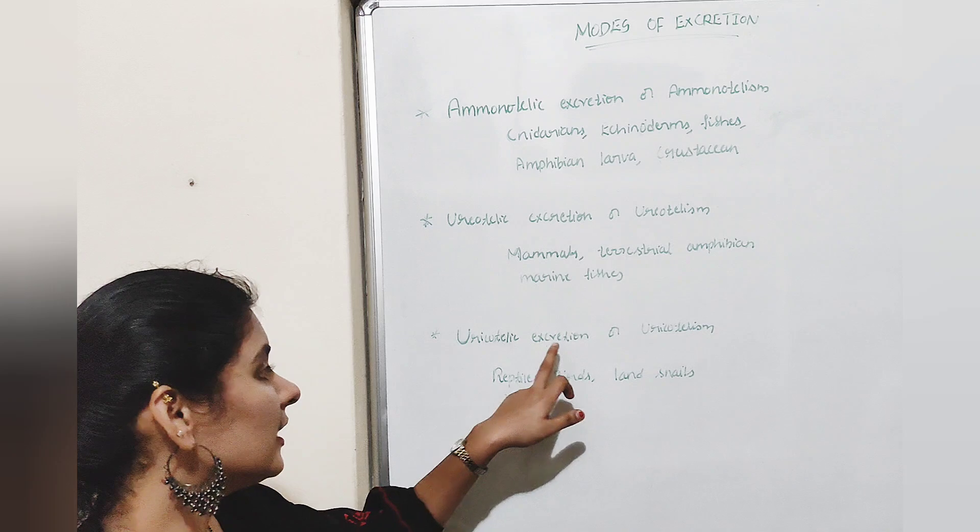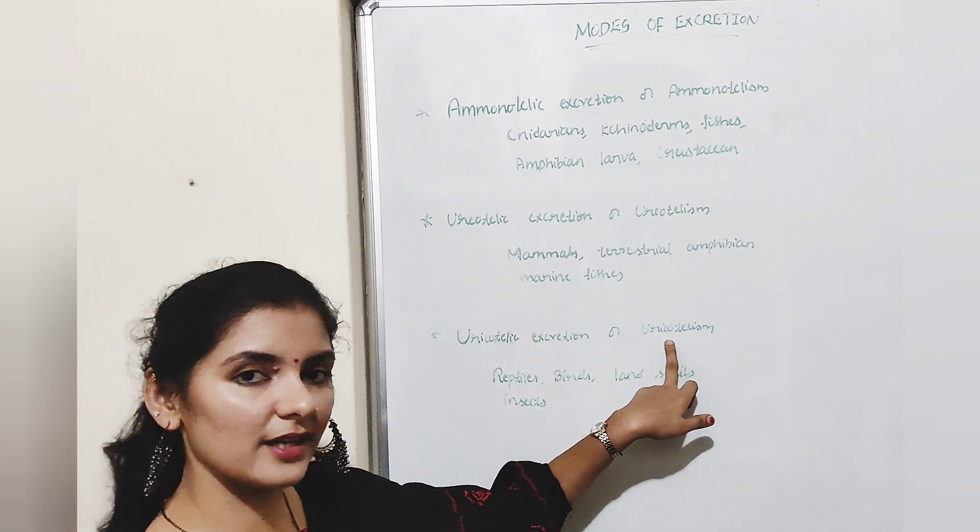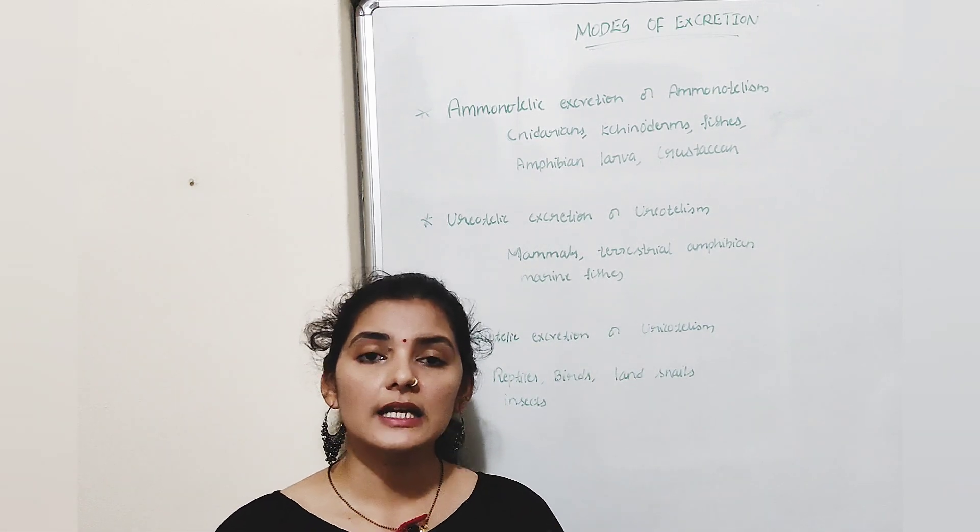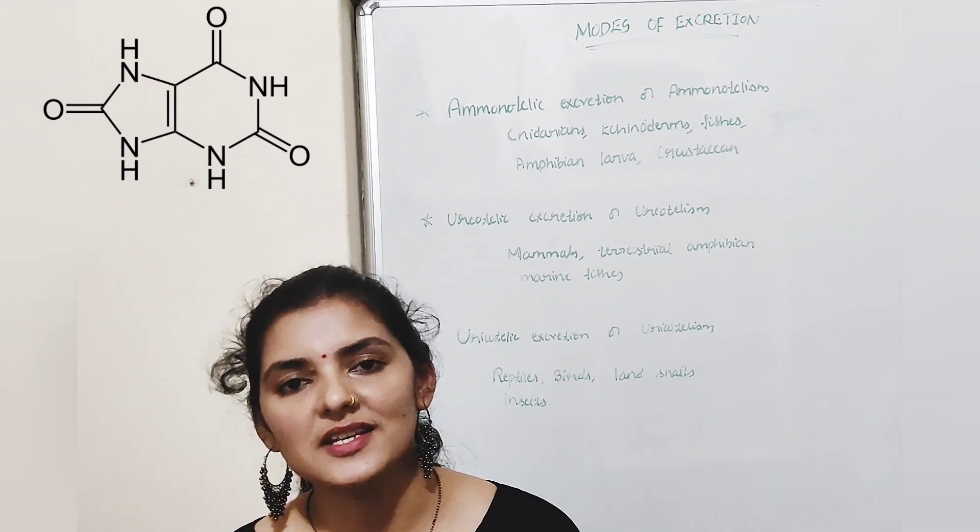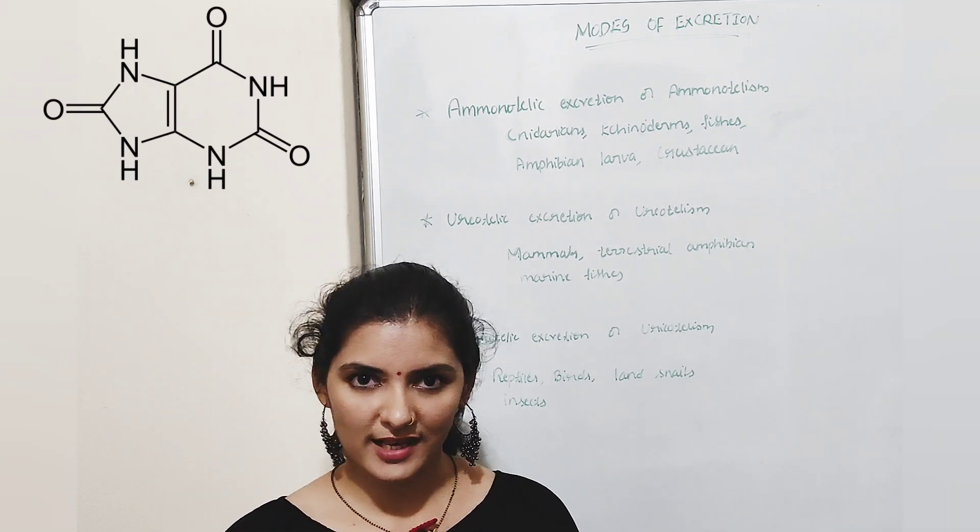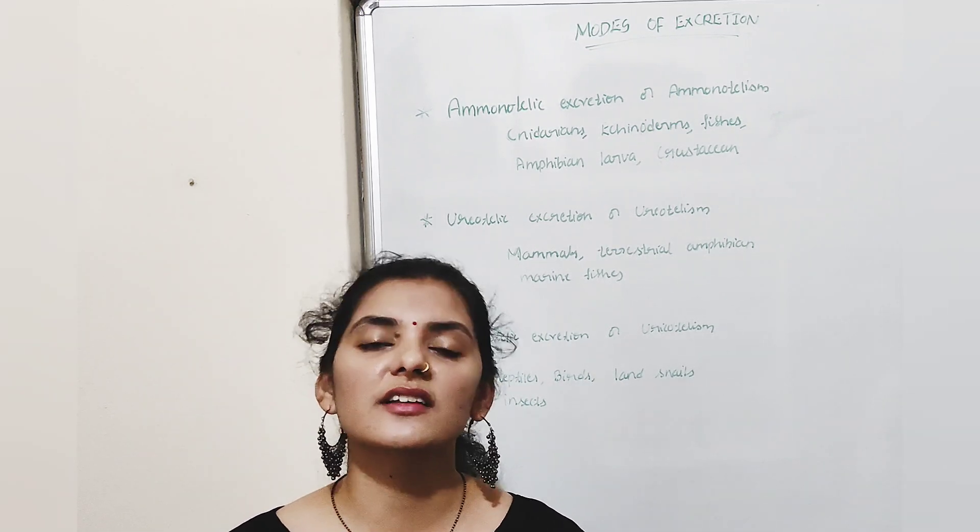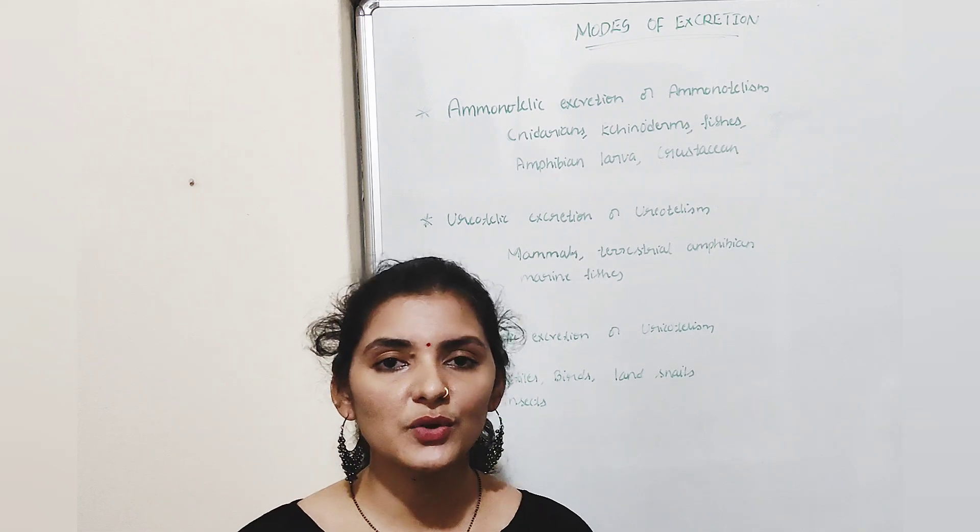The third type is uricotelic excretion or uricotelism. In these organisms, nitrogenous waste is excreted in the form of uric acid. Animals which excrete this uric acid are known as uricotelic animals.